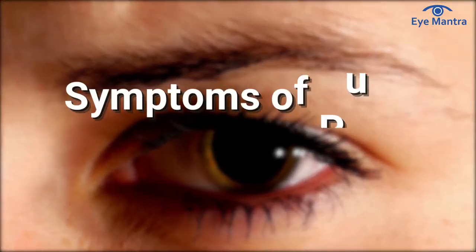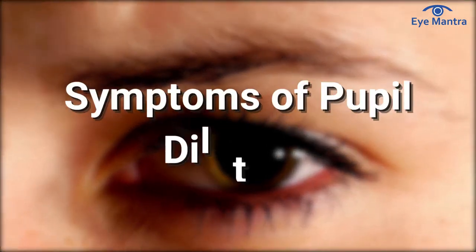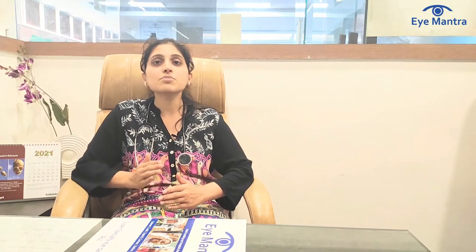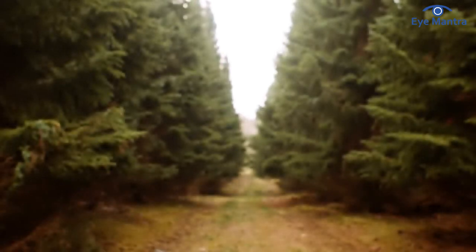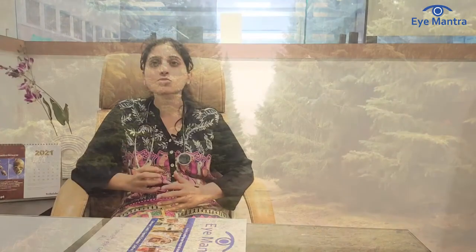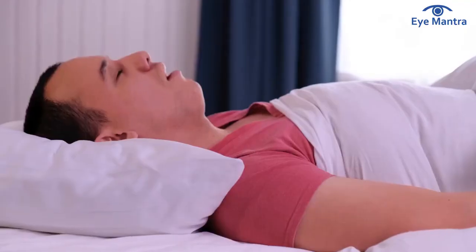Symptoms of pupil dilation: When the pupils are dilated, the eyes become more sensitive to light. This can lead to blurry vision and, in some cases, a general feeling of constriction around the forehead and eyes. Some individuals may also experience headache, dizziness, eye irritation, and trouble sleeping along with mydriasis.